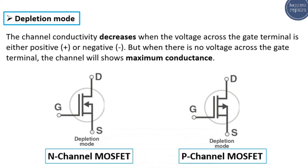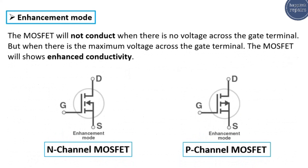I'm going to show you in the next slides how to differentiate between n-channel and p-channel MOSFETs using the multimeter. Now, in enhancement mode, the MOSFET will not conduct when there is no voltage across the gate terminal, but when there is maximum voltage across the gate terminal, the MOSFET will show enhanced conductivity. As you can see, we have two MOSFET symbols — n-channel and p-channel — using the same working principle. The arrow directions remain the same, but the symbol for enhancement mode is different: in the gate area you can see these cut lines, which is the enhancement mode symbol.